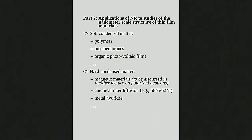So you have a general idea of how the scattering can give us information about real-space structures in reflectometry from thin film systems. Part two — let's look at some real examples for polymers, biomembranes, organic films, and photovoltaic films. In the next talk after the break, we'll concentrate on hard condensed matter and magnetic materials, since we're going to be talking about polarized neutrons.